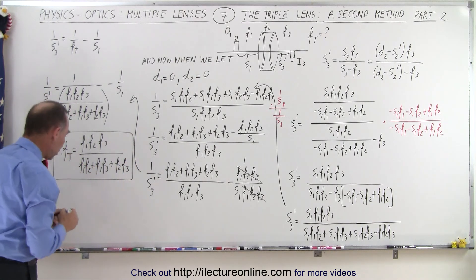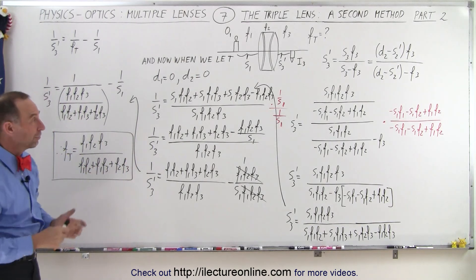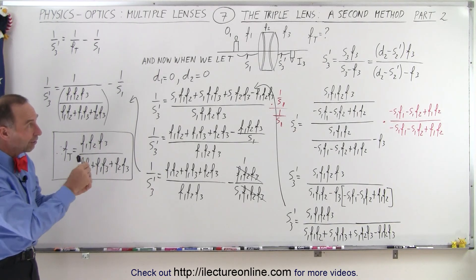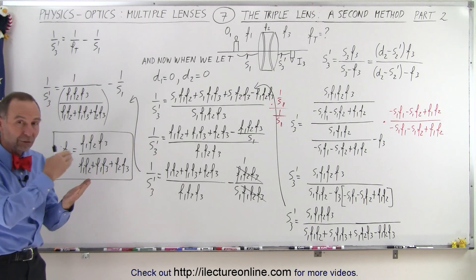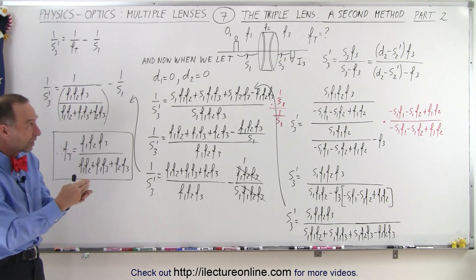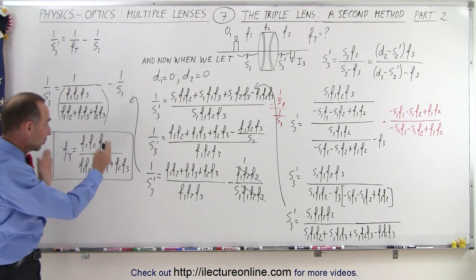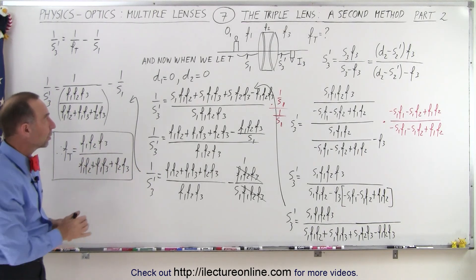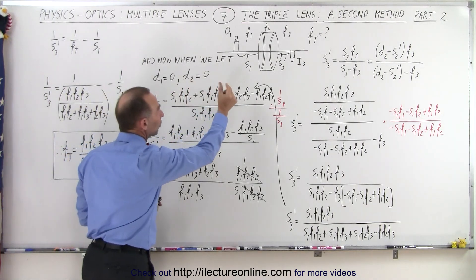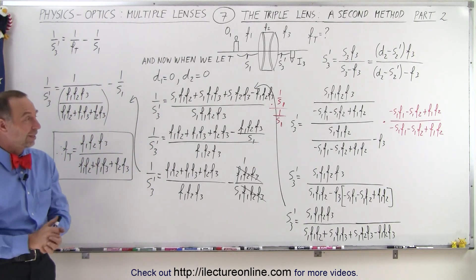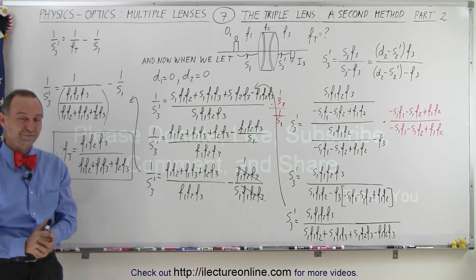Just like we've seen in a previous video, there is the equivalent focal length of a three lens system, working through the entire set of going from the first object to the first image, that becomes a second object to the second image, that becomes a third object to the third image, all the way through. Then bring your distances d1 and d2 to zero and end up with the exact equation we're looking for. That's how it's done.